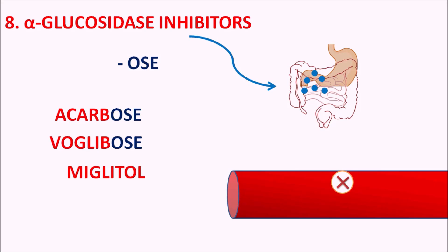In summary, we have eight categories of anti-diabetic agents identifiable by their prefix or suffix: GLY prefix indicates sulfonylureas; GLINIDE indicates sulfonylurea-like drugs (meglitinides); GLITAZONE indicates thiazolidinediones; FORMIN indicates biguanides; GLUTIDE indicates glucagon-like peptide analogues (incretin agonists); GLIPTIN indicates DPP-4 inhibitors; GLIFLOZIN indicates SGLT-2 inhibitors; and OSE indicates alpha-glucosidase inhibitors. In this way, we can easily remember anti-diabetic agents by their suffix. Thank you for watching — please subscribe, share, and post your comments.